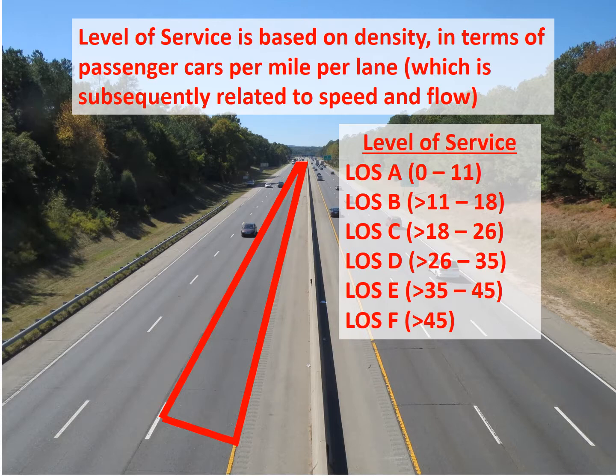Level of service C is greater than 18 and up to 26 passenger cars per mile per lane — reasonable and uniform flow, but operating speeds start to degrade, so drivers aren't always able to choose their exact speed. Level of service D is approaching unstable flow, with a larger effect on operating speeds. Level of service E is unstable flow, where at any moment the flow can degrade substantially.